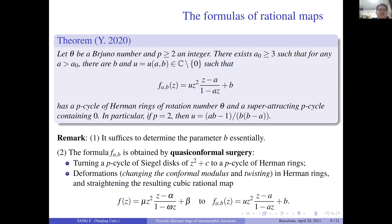So we will use the quasi-conformal surgery method. Our first main result is: given rotation number theta and an integer P at least two, there exists a constant A-naught, which is at least three, such that for any A greater than A-naught, there are B and U depending on A and B, such that the following map F_{A,B} has the desired properties.